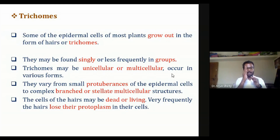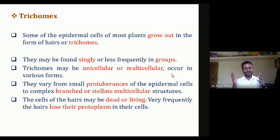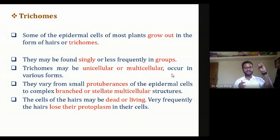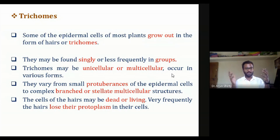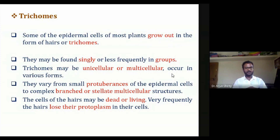Trichomes are also used as a characteristic feature for the classification of a plant. As we already studied in the previous semester — in palaeotaxonomy, chemotaxonomy, and cytotaxonomy — classification is based on different characteristics of pollen, cells, and chemical substances. In some plants, trichomes are also used as a tool for classification in some systems of taxonomy.